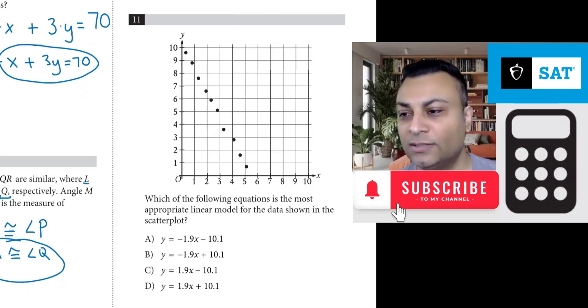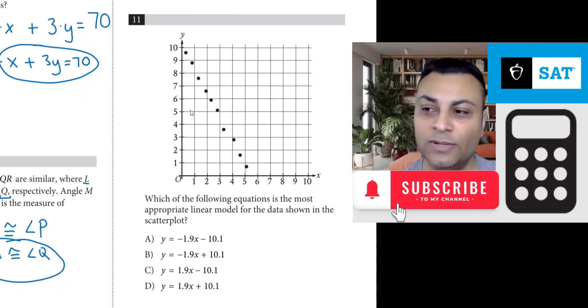Question 11 has a scatter plot. Which of the following equations is the most appropriate linear model for the data shown in the scatter plot? So a linear model would be a line of best fit, roughly this kind of line, roughly speaking.